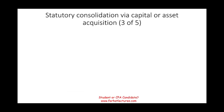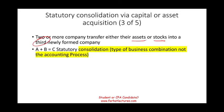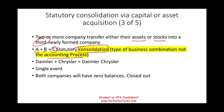Another type is statutory consolidation via capital or asset acquisition. Here, two or more companies transfer either their assets or their stocks into a third, new company — company A plus company B combine to form company C. Note that this is called statutory consolidation, which has nothing to do with accounting consolidation. An example is Daimler and Chrysler combining into DaimlerChrysler as a new company. Again, it's a single event: both companies have zero balances and close out, while the new company starts.